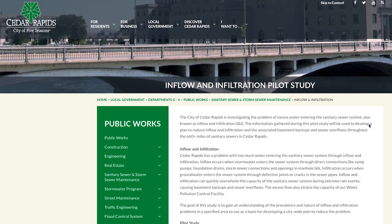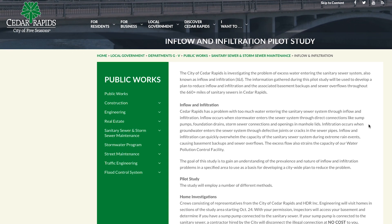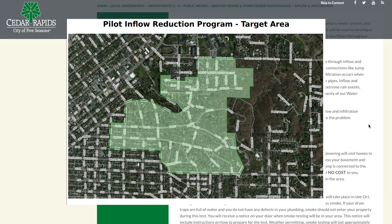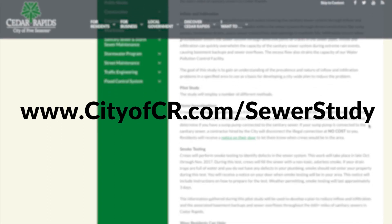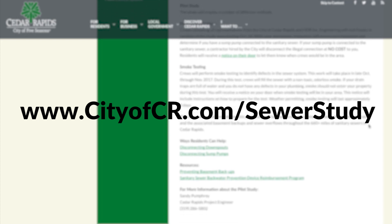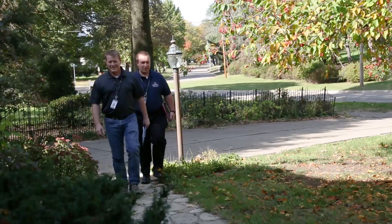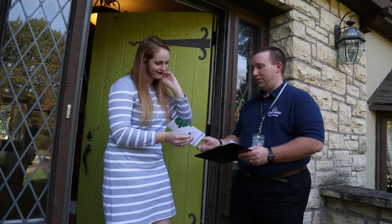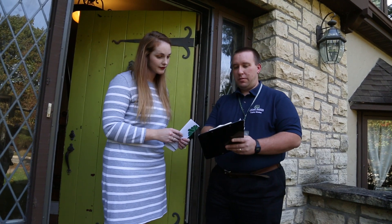The solution is simple and you can help. Check the map on the City of Cedar Rapids website at www.cityofcr.com/sewerstudy. If you live in the designated area, simply allow access to the city when they go door to door in your neighborhood as part of the effort to identify and correct these connections and alleviate flooding of residents' homes.